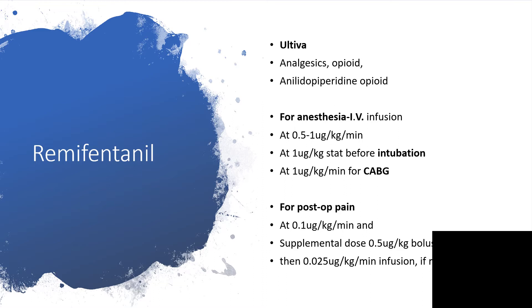Before intubation, you can also give it as 1 microgram per kilogram per minute for coronary artery bypass graft. If you want to use it for post-operative pain, you can give it at the rate of 0.1 microgram per kilogram per minute with a supplemental dose of 0.5 microgram per kilogram bolus. Then if you choose to give it as infusion post-operatively, you can give 0.025 microgram per kilogram per minute.